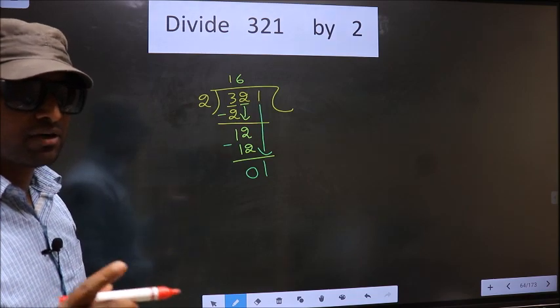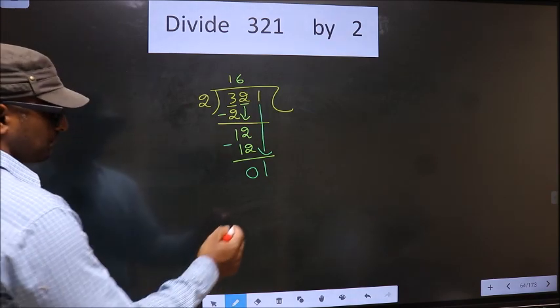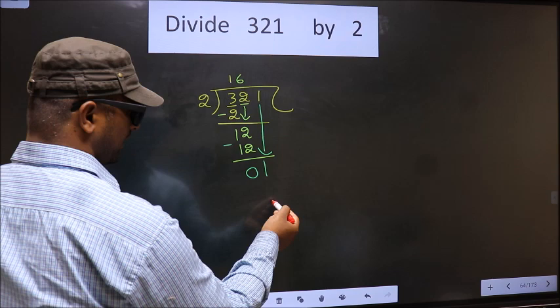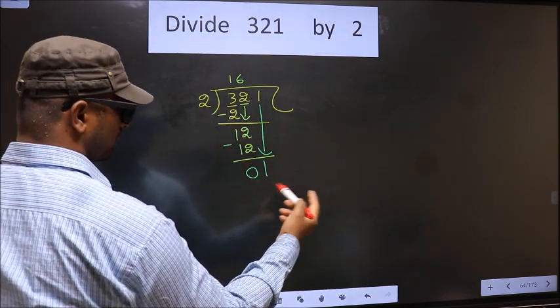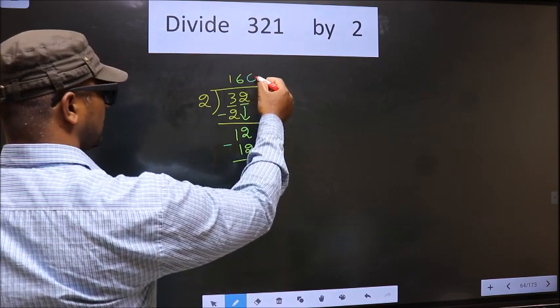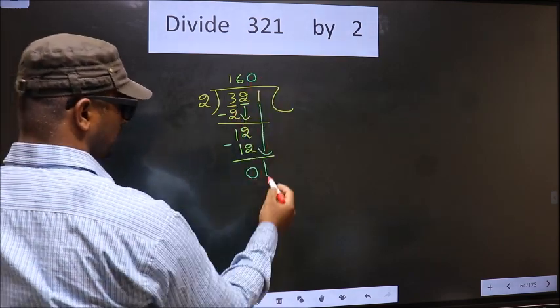Instead, what you should think of is what number should we write here? If we write 2 here, that is larger than 1. So what we do is we take 0 here. So 2 into 0 is 0.